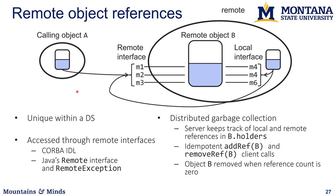With RMI you have remote object references where some objects may be local and some have remote references available to other objects. This can also be applied to functions, where some are externally accessible and some are not. RMI also introduces distributed garbage collection, where you need a system to walk through the object graph, find objects with no remaining references, and deallocate their memory.